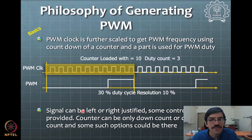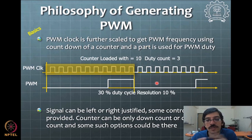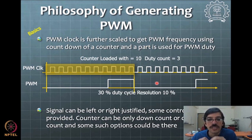You can also have additional controls — like left or right justified signals, or signals delayed with respect to other signals. The counter can be counting only down or counting up, all those kinds of things are possible. The counter is loaded with 10, and this value can be counted up or counted down. The basic concept is essentially this for getting the PWM signal produced in the system.